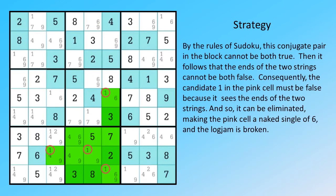By the rules of Sudoku, this conjugate pair in a block cannot be both true. Then it follows that the ends of the two strings cannot be both false. Consequently, the candidate 1 in the pink cell must be false,